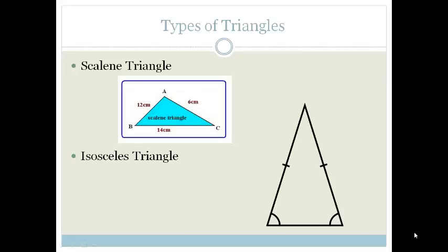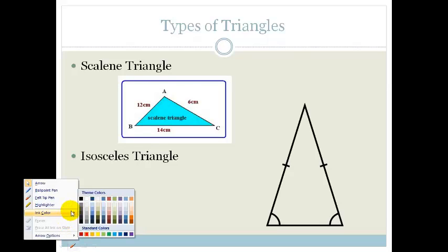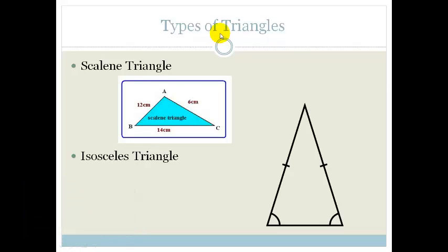First of all, you need to know that there are different types of triangles. The first type of triangle you get is a scalene triangle. A scalene triangle is one in which all three sides have different lengths.